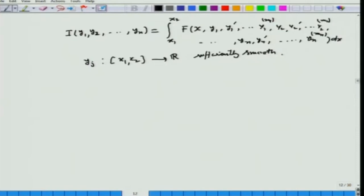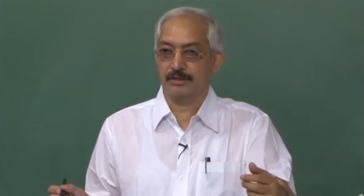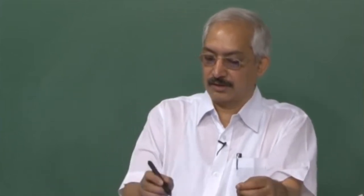Earlier in the first case, we had taken only one dependent function y₁. So our functional I(y₁) was the integral from x₁ to x₂ of f(x, y₁, y₁'). Then we considered I(y₁, y₂, ..., yₙ) with f of x, y₁, y₁', y₂, y₂', up to yₙ', and like that we went to higher order derivatives also. So all those cases were particular cases of the most general functional of this type.